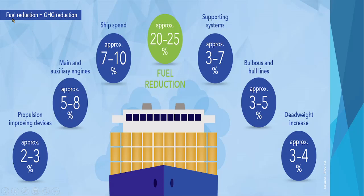Fuel reduction equals GHG reduction. If we fix propulsion improving devices we can improve efficiency by 2 to 3 percent. If we improve main engine design we can improve by 5 to 8 percent. If we improve ship speed optimization we can improve GHG reduction by 7 to 10 percent. If we reduce fuel consumption we are reducing GHG by 20 to 25 percent — that is majorly what we are doing in EEXI, reducing speed hence reducing fuel consumption and hence reducing GHG emissions by a higher percentage. Supporting systems, bulbous bow and hull lines, superstructure improvements are also methods by which we can reduce EEXI and EEDI values.